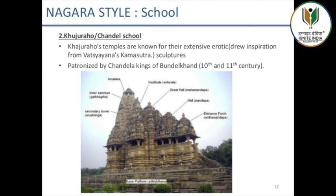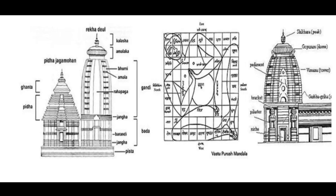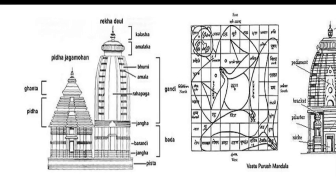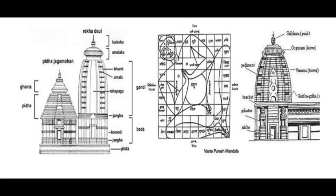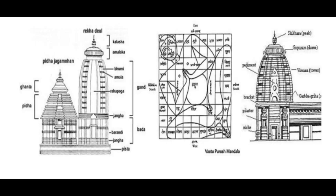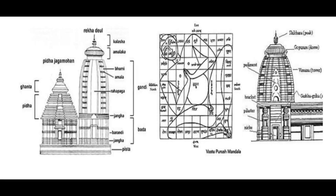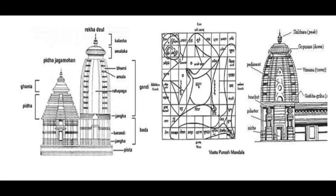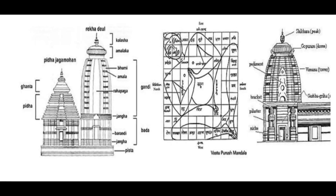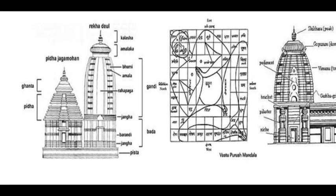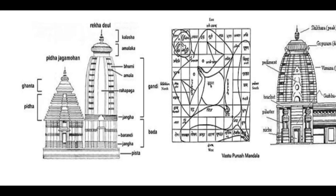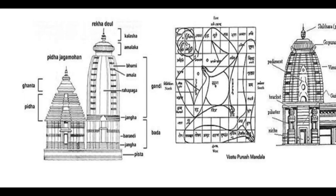There are many subdivisions of Nagara temples depending on the shape of the shikara. There are different names for the various parts of the temple in different parts of India. However, the most common name for the simple shikara which is square at the base and whose walls curve or slope inward to a point on top is called the latina or the rekha-prasada type.